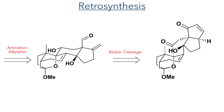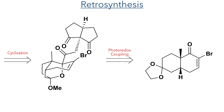The central six-membered ring would be constructed using a cyclization reaction involving the addition of an organolithium species to a carbonyl group, and ultimately this intermediate could be synthesized using a photoredox coupling of a previously reported compound prepared from the Hajos-Parrish ketone. So let's start with the forward synthesis.